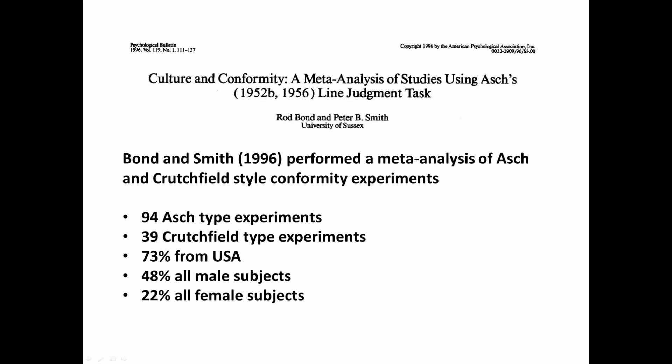Moving on, one very influential study cited numerous times is a meta-analysis by Rod Bond and Peter Smith. In 1996, they meta-analyzed all the different types of Asch studies that had been done, as well as Crutchfield type conformity experiments. Crutchfield style conformity is similar to the Asch paradigm, except the stimulus is more ambiguous — like looking at modern artwork where there's no clear answer. A meta-analysis is simply a way of taking the effect size from each of the different studies using the variable of interest and averaging those effect sizes. There were 94 different Asch experiments done between 1952 and 1996.